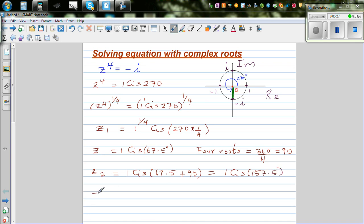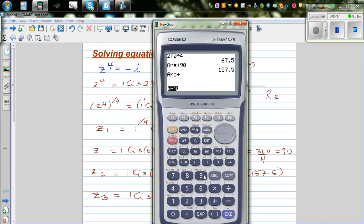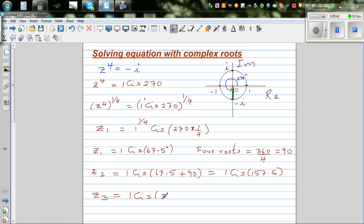z3 is 1 cis 157.5 plus 90, which equals 247.5.